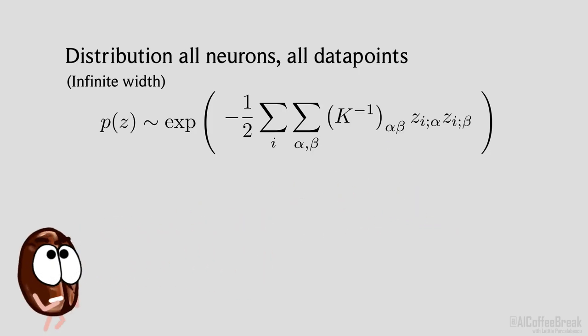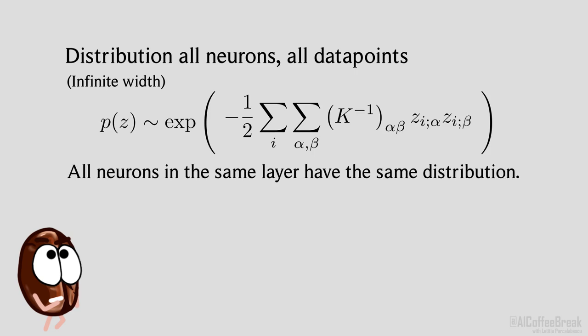This implies that the distributions of all the neurons are the same. It has to be like this. That's because if we were to interchange two neurons, nothing would change, so they're all the same. This also means that the neurons are statistically independent.